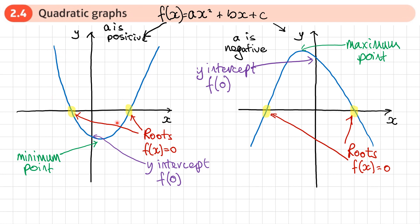For both U-shaped and N-shaped quadratics, the roots of a quadratic are the points where the graph crosses the x-axis. We set f(x) equal to 0 and solve for x — that gives us the x-coordinates of the roots where the graph intercepts or crosses the x-axis.